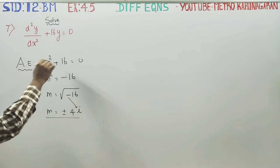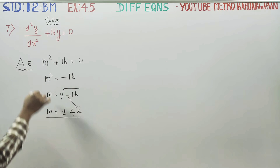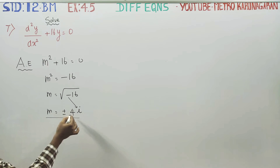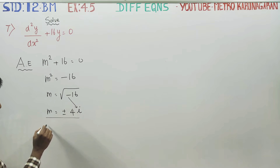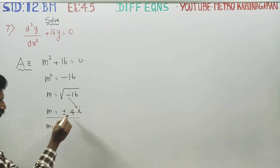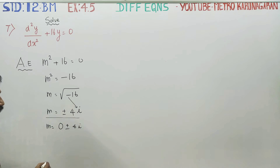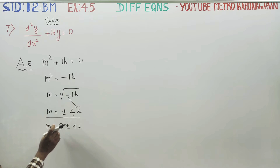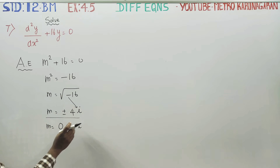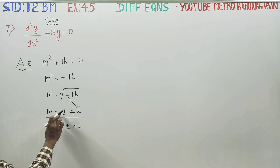So m is equal to plus or minus 4i. Since m equals alpha plus or minus beta·i, the form will become alpha plus or minus i·beta. Here, a equals 4 and b equals 4, so it becomes alpha plus or minus i·beta.